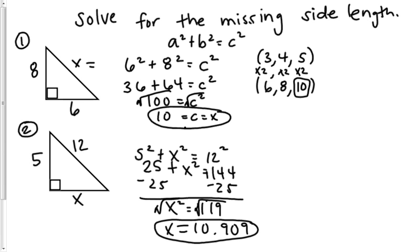And number 2, if you are not solving for the hypotenuse, you subtract. So, you do 12 squared. I could have written it like this: 12 squared minus 5 squared, which is equal to 119, and then do the square root and got 10.909 there.